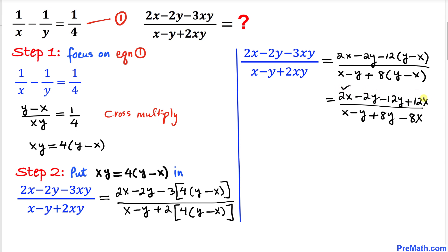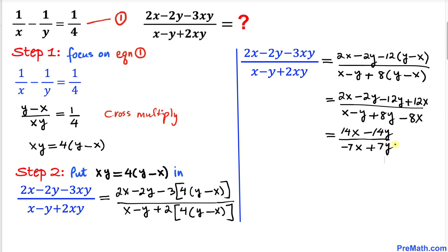Combining like terms: in the numerator, 2x plus 12x becomes 14x, and negative 2y minus 12y becomes negative 14y. In the denominator, x minus 8x becomes negative 7x, plus 7y.